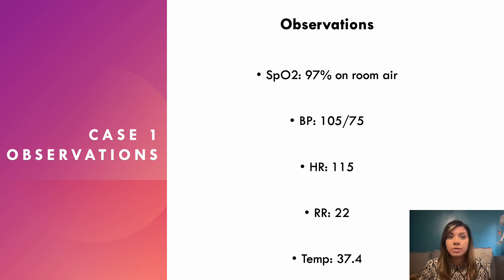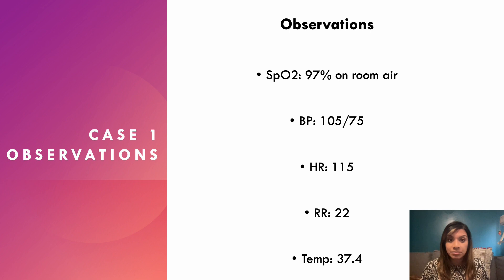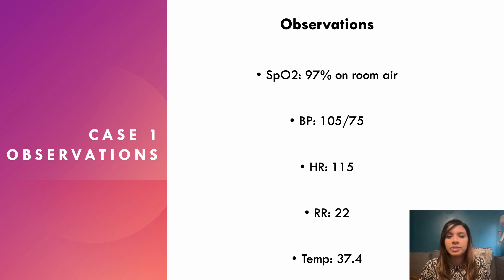The observations show this patient is tachycardic and breathing faster than he should be. He is maintaining his saturations, but that raised respiratory rate suggests he's having to breathe faster than usual to maintain them. We need to assess this patient using an A to E approach.